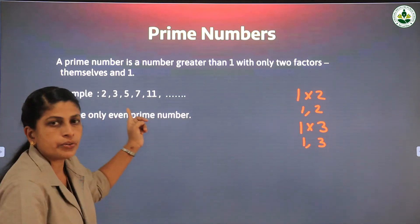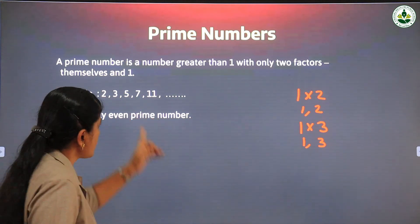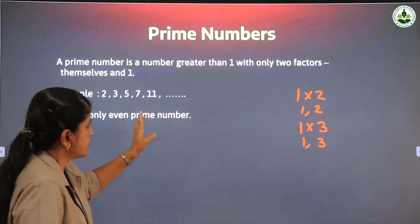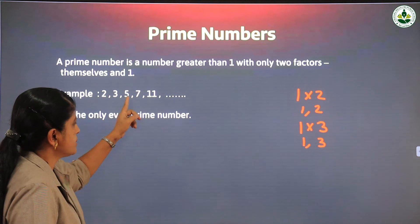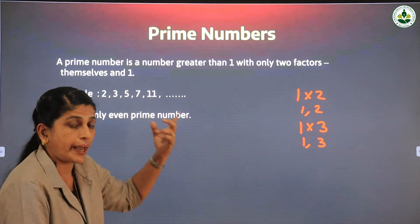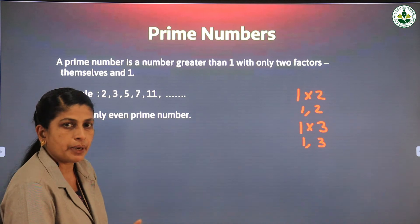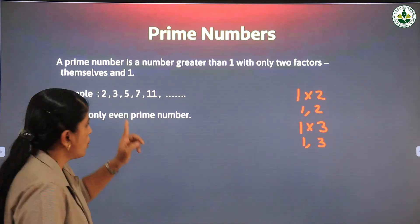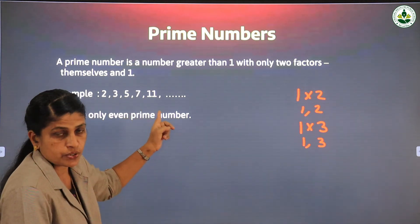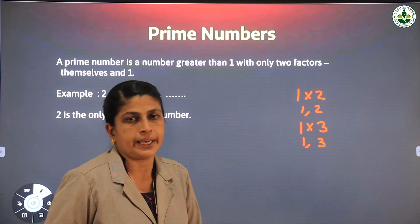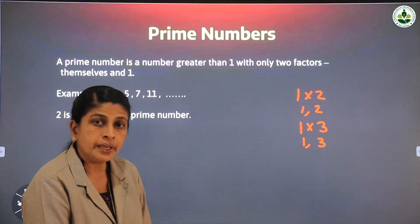Similarly, 5 has only 1 and 5 as factors, and 7 has only 1 and 7 as factors. Therefore examples of prime numbers are 2, 3, 5, 7, 11. Can you say which is the next prime number after 11? Yes, 13 is also a prime number. Notice that all these prime numbers except 2 are odd numbers. That means 2 is the only even prime number.